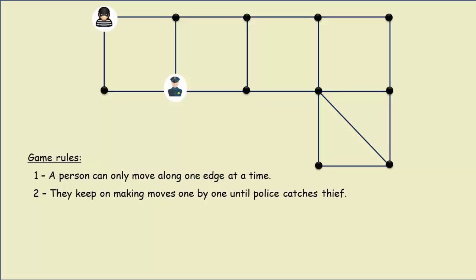So for example, if the police officer moves to this point, then the thief can move to this point here. They can keep on making moves one-by-one in any direction.